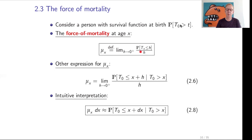We know that the probability that Tx is less than or equal to h can, by our assumption, always be expressed in terms of probabilities related to a newborn. So we rewrite it as the conditional probability that T0 is less than or equal to x plus h, given that T0 exceeds x, divided by h, and take the limit as h goes to 0. That limit gives us mu_x.